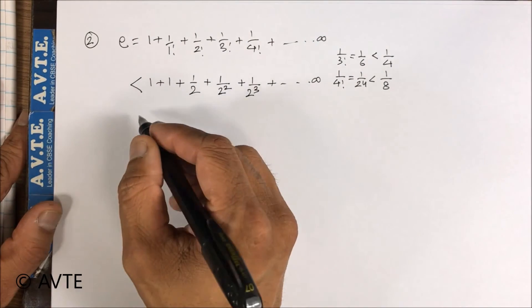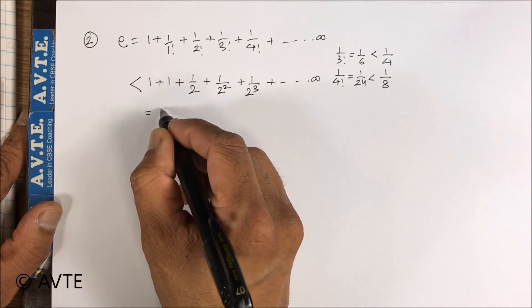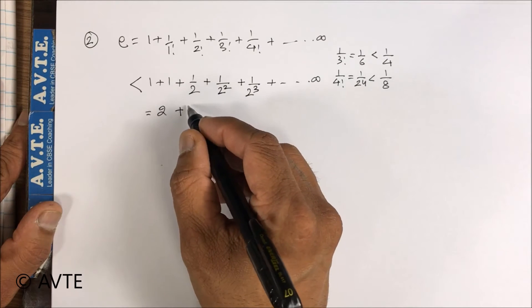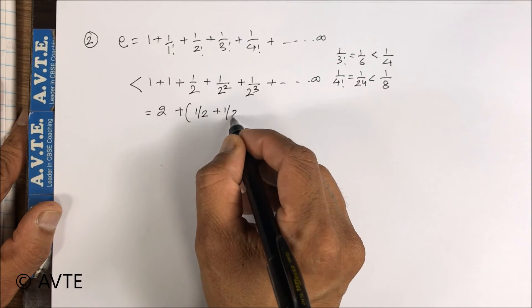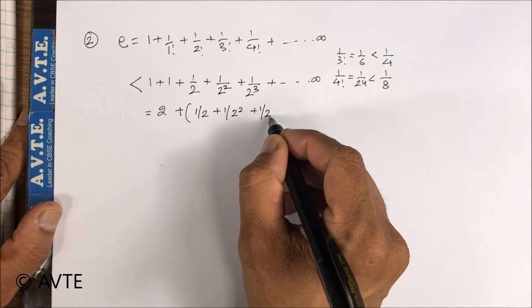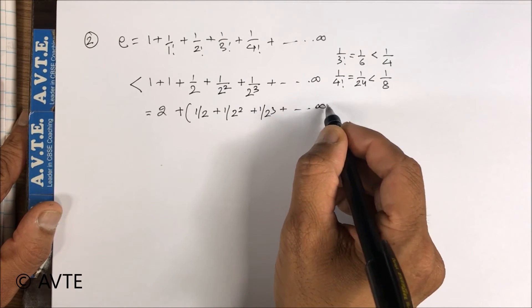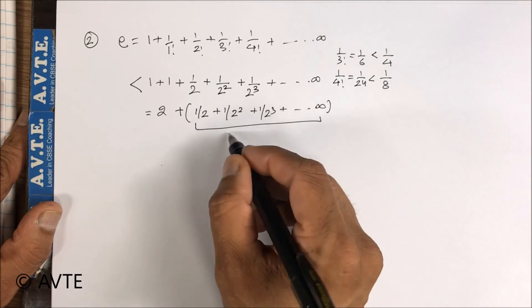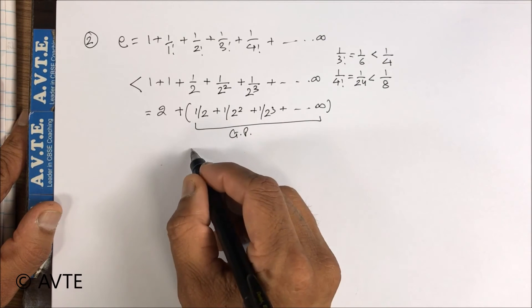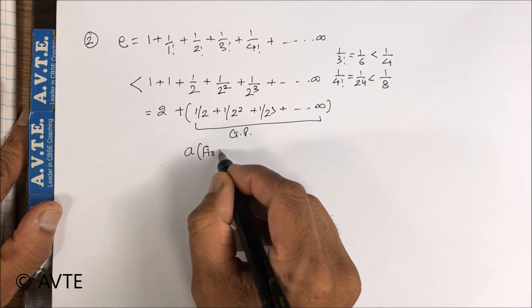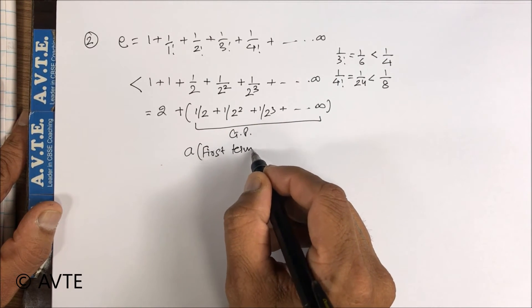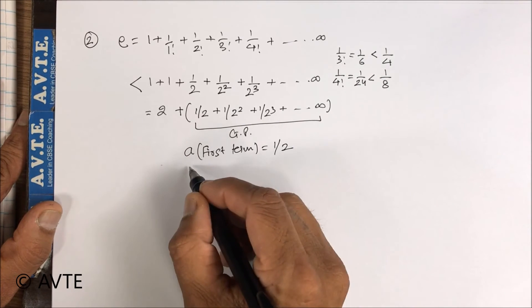What's the use? The use is I can write this as 2 plus a geometric series which is 1 by 2, 1 by 2 square, 1 by 2 cube. What is the first term here in this GP? The first term is 1 by 2 as well as the common ratio is 1 by 2.